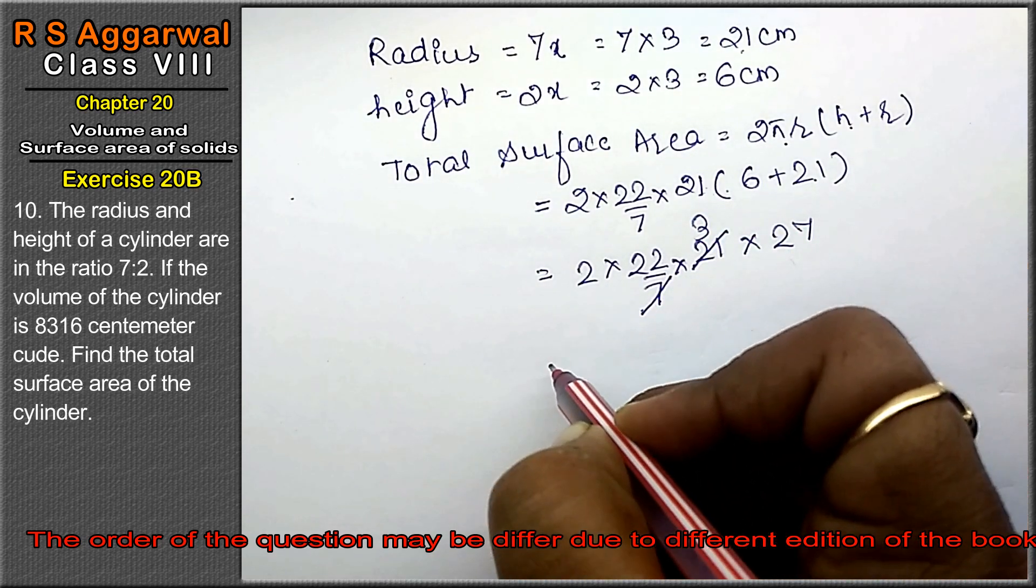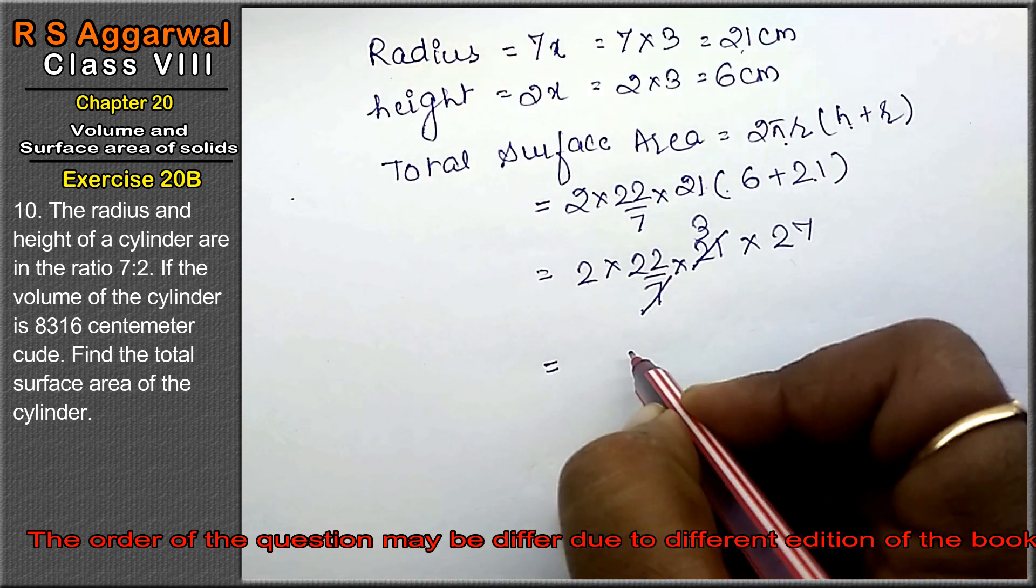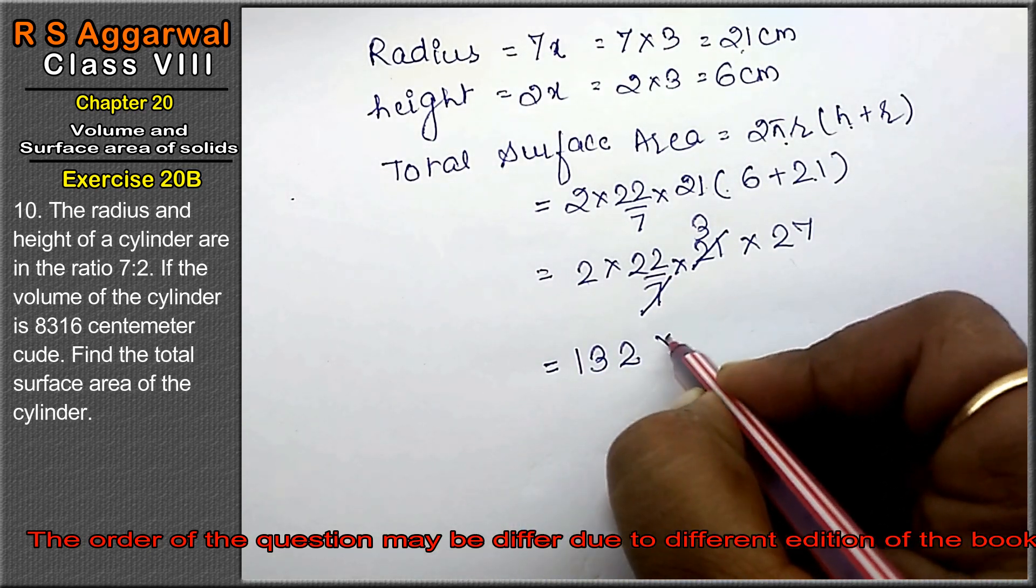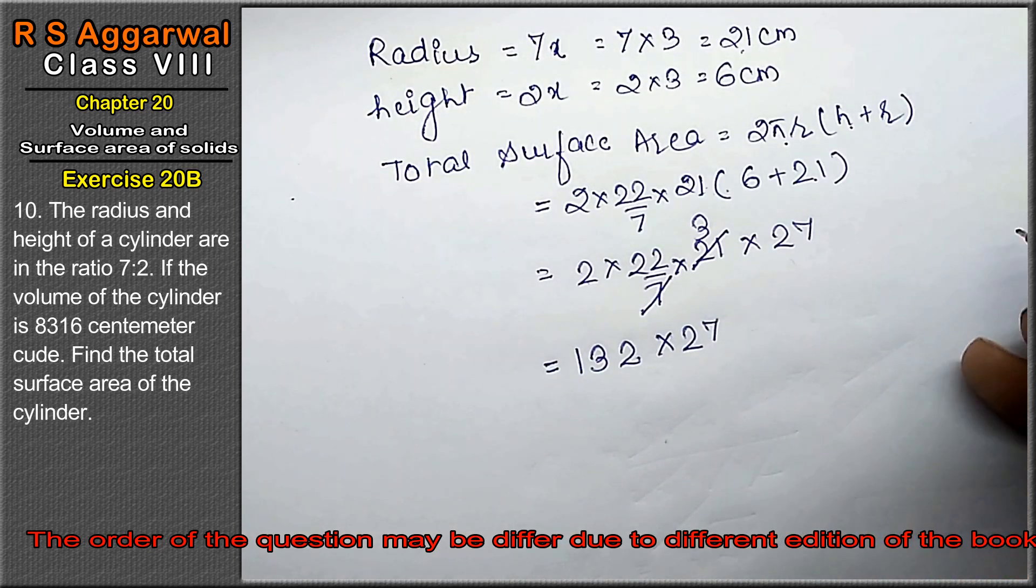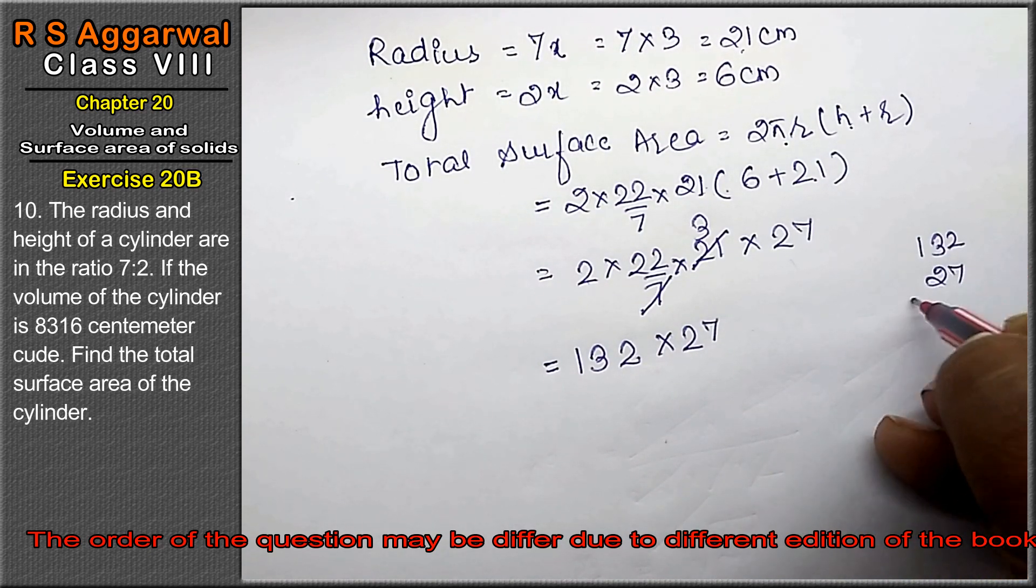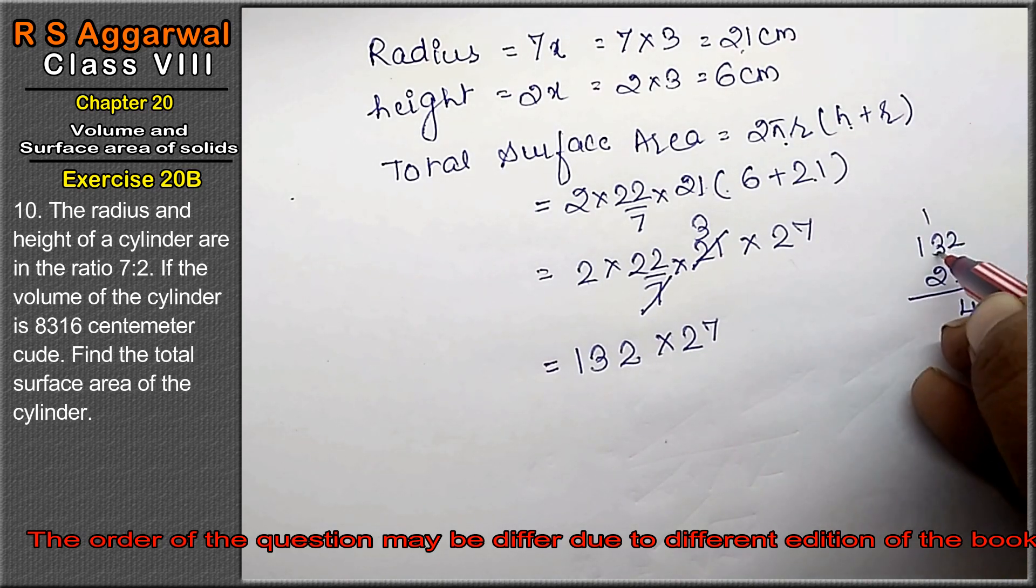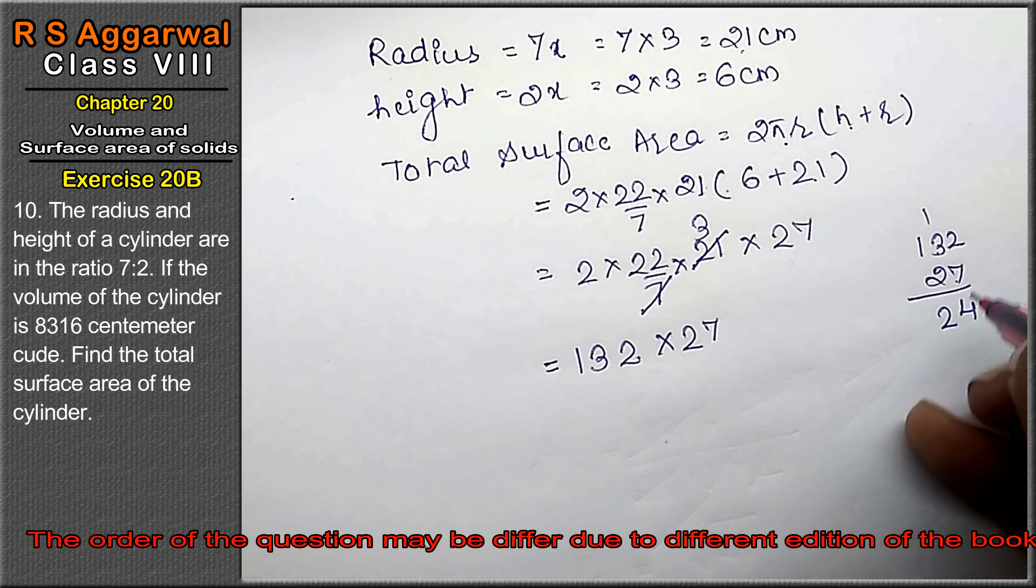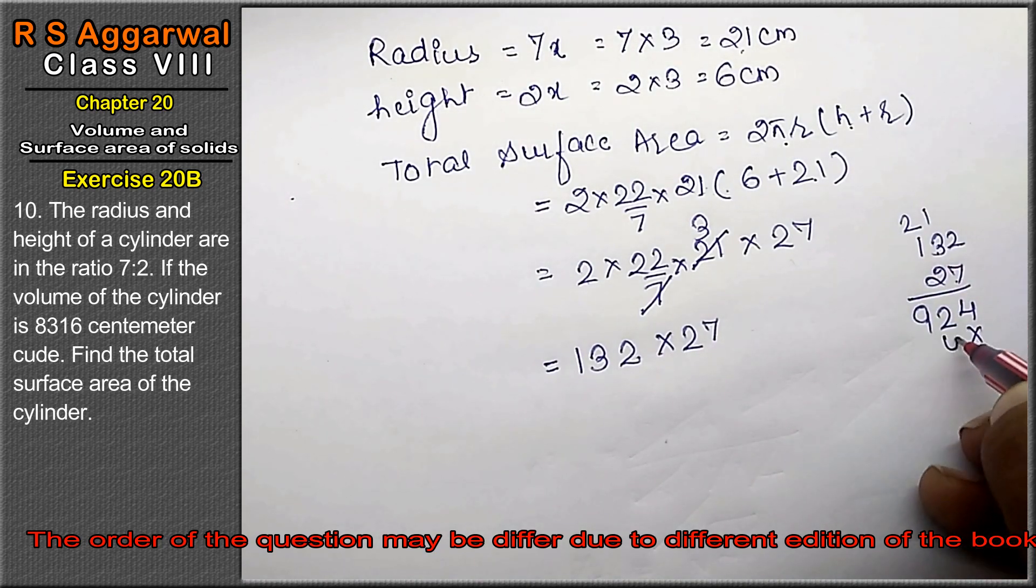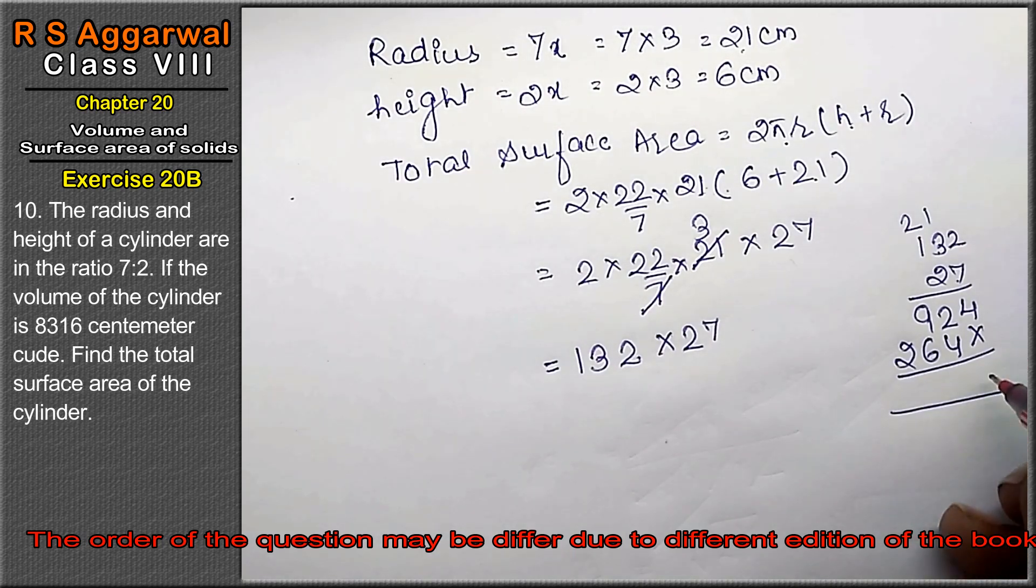So this is 2 into 22 upon 7 into 21 into bracket, because there is no addition in between, that means multiplication. 21 plus 6 is 27. 7 into 3 is 21. See, 2 times 3 is 6, 6 times 2 is 12 carry 1, 6 times 2 is 12 plus 1 is 13.